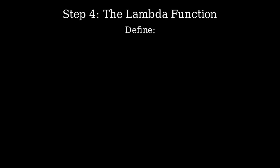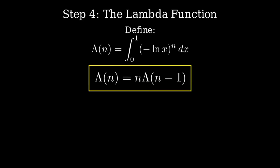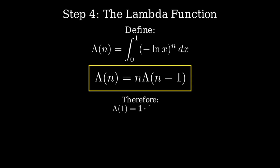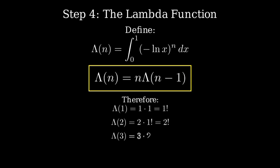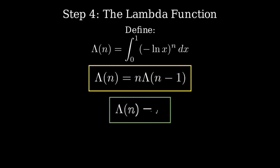Let me define λ(n) = ∫₀¹ (-ln x)^n dx, the integral of our function f_n. From our work, λ satisfies the recurrence λ(n) = n · λ(n-1). The base case: λ(0) = ∫₀¹ 1 dx = 1. Unfolding the recurrence: λ(1) = 1 = 1!, λ(2) = 2 · 1! = 2!, λ(3) = 3 · 2! = 3!. Lambda of n equals n factorial for all positive integers n. We've constructed it to do exactly this.